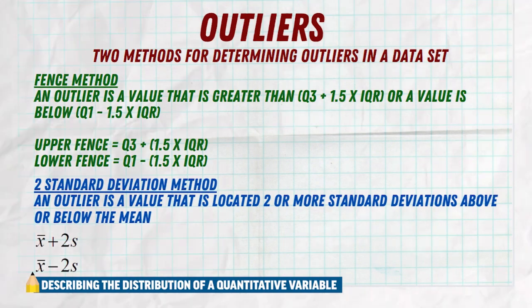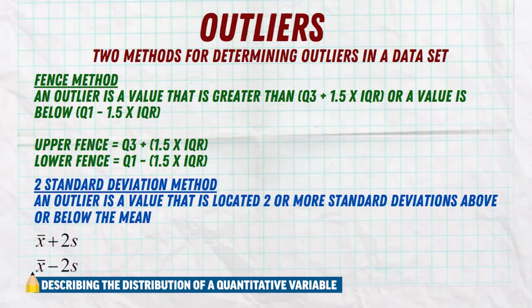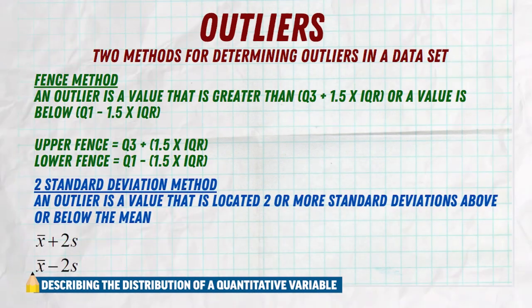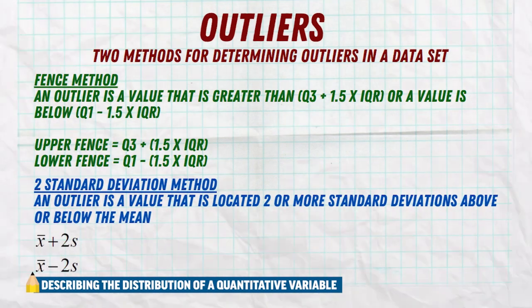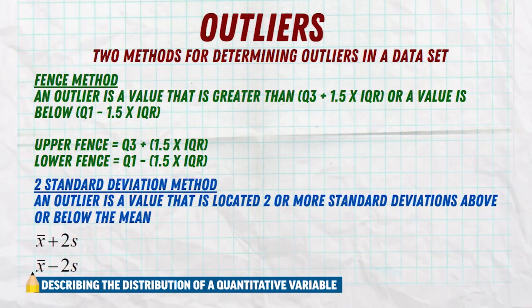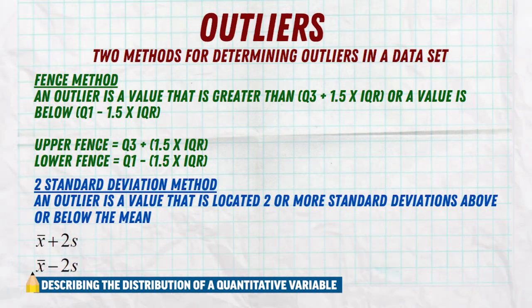You could have none, one, two, or more outliers on either side. The second way to determine outliers is using your mean and standard deviation. We identify as outliers any value that is more than two standard deviations either above or below the mean. Take your mean plus two standard deviations and your mean minus two standard deviations to get an interval — any values outside that interval are outliers. The fence method is probably the most famous, but the mean and standard deviation method certainly works too, depending on what information you have.